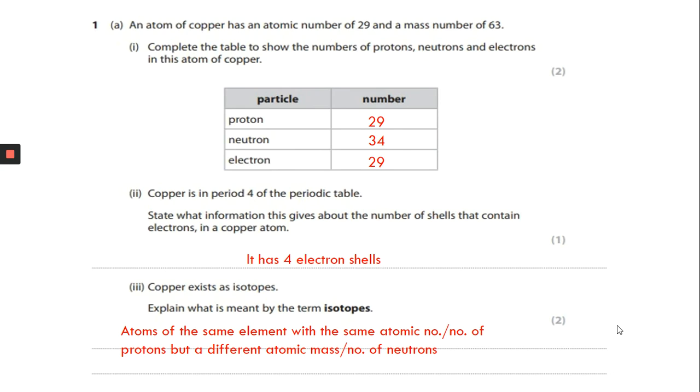Next question. Copper exists as isotopes. Explain what is meant by the term isotopes. So atoms of the same element, the same atomic number or number of protons, but a different atomic mass or number of neutrons. If you reference electrons in this question, it makes no difference. You won't get a mark for it. It's the number of protons or the atomic number you need to talk about and the atomic mass or the number of neutrons being different that you need to talk about to get your two marks.